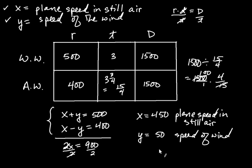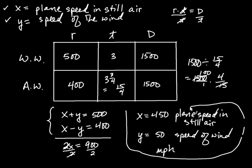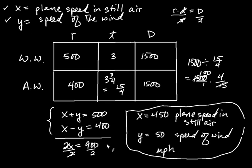Both of these are in miles per hour, so this is your answer. The key to these problems is setting up this table: fill in the easy information, then create a system of equations involving your unknowns. And that's how you solve distance-rate-time problems.